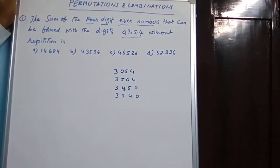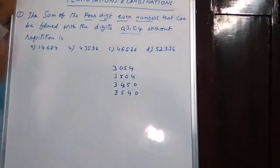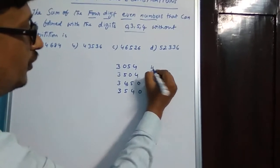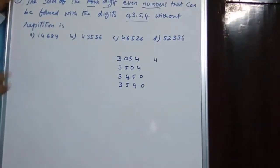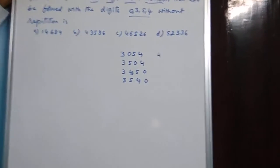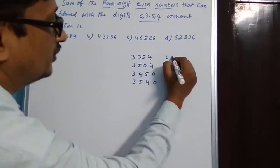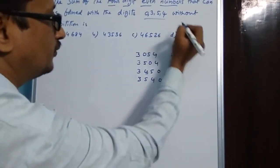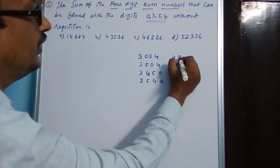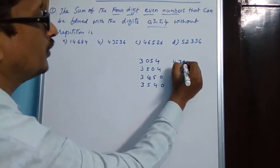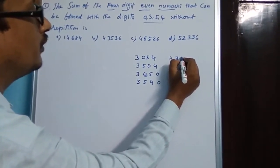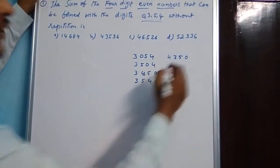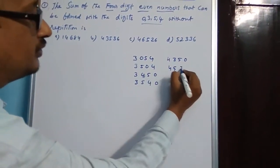Next, the four-digit even numbers that begin with 4. We will see: 4, 3, 5, 0 — this is a four-digit even number. And 4, 5, 3, 0. Only there are two numbers that will begin with 4.